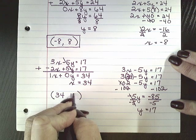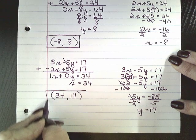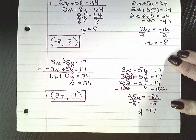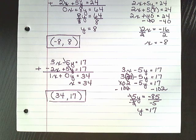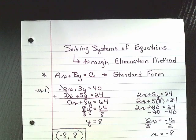So 34, 17 would be our point of intersection. If we were to graph this, it would be the point of intersection. So let's real quickly write down what we just did.